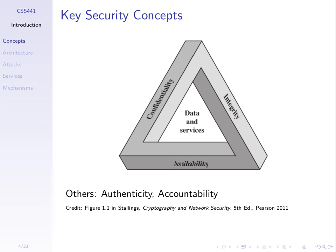Integrity covers several things. It means making sure that information we access hasn't been modified — when I send a message from one point to another, the information received at the destination is the same as what was sent, nothing modified along the way. It also covers integrity of users: making sure it's the right person accessing the information, so we use techniques to authenticate users. Authentication or authenticity often goes with integrity of information.